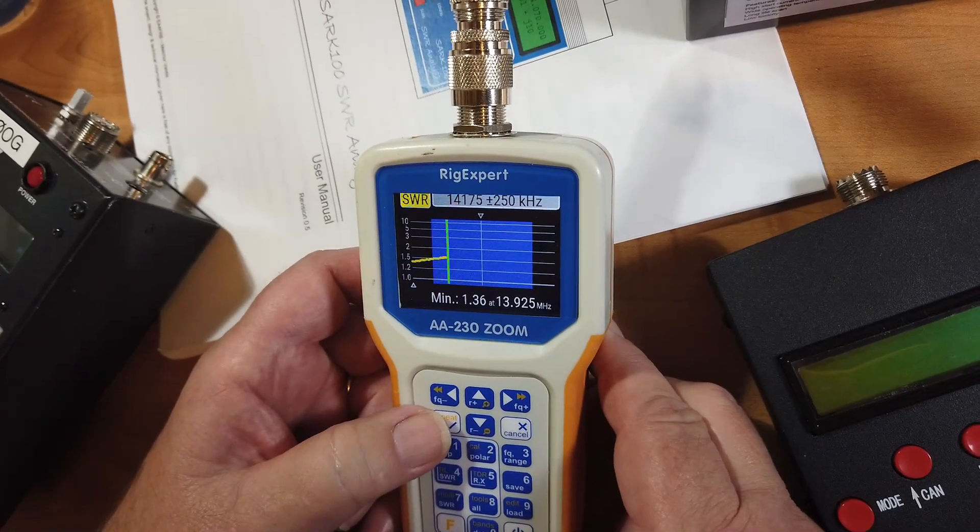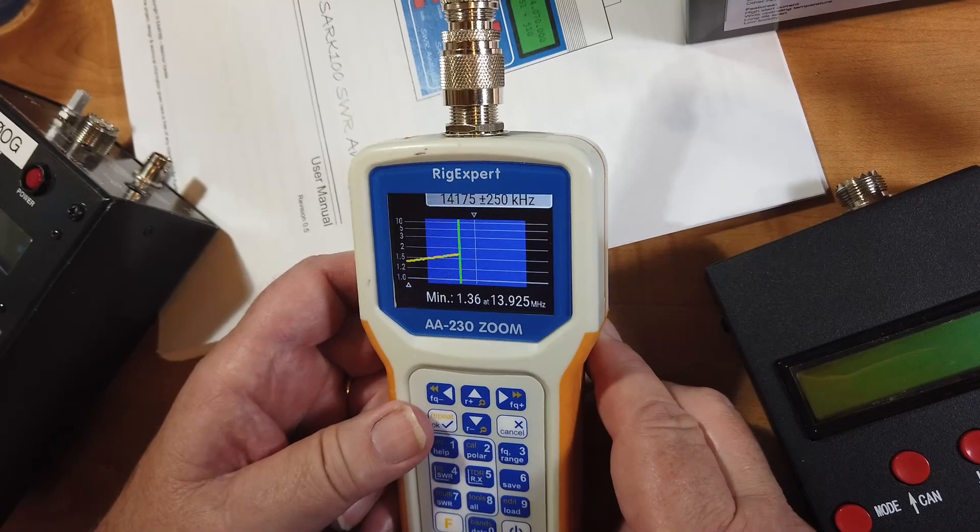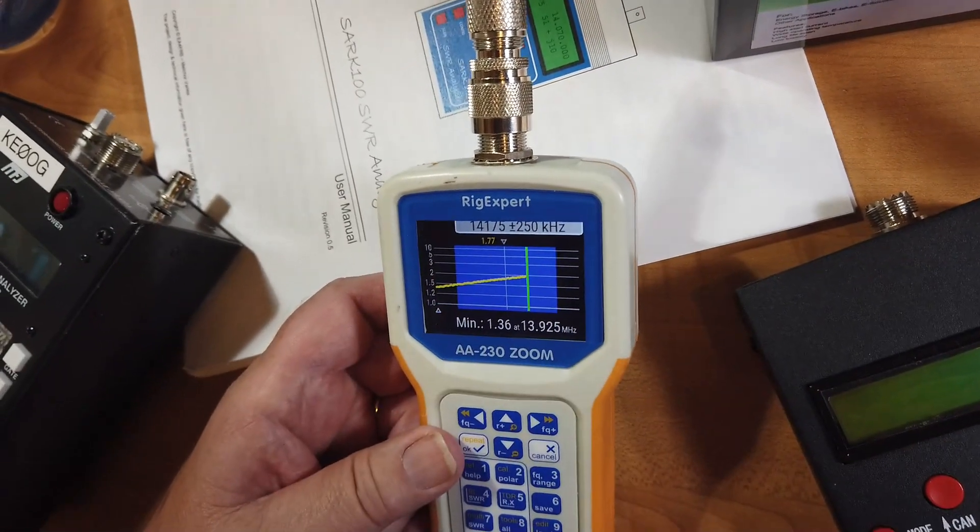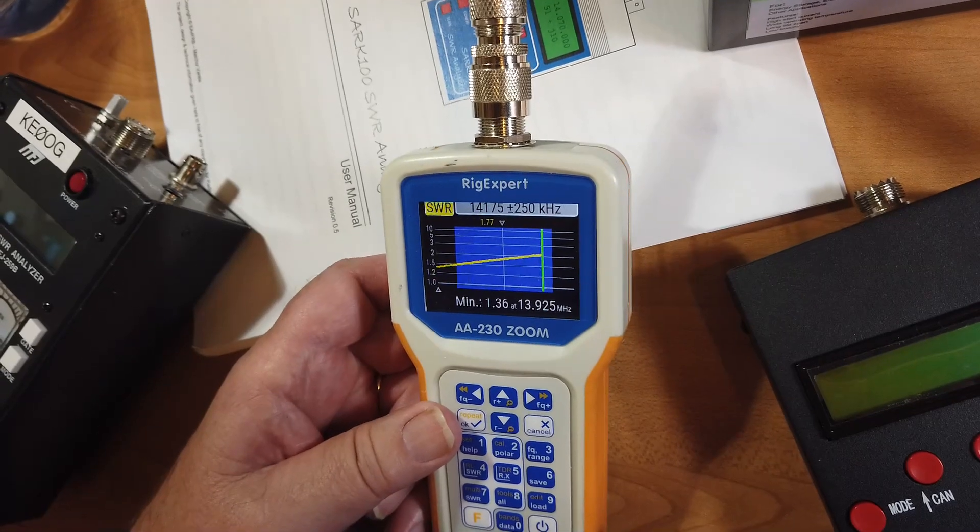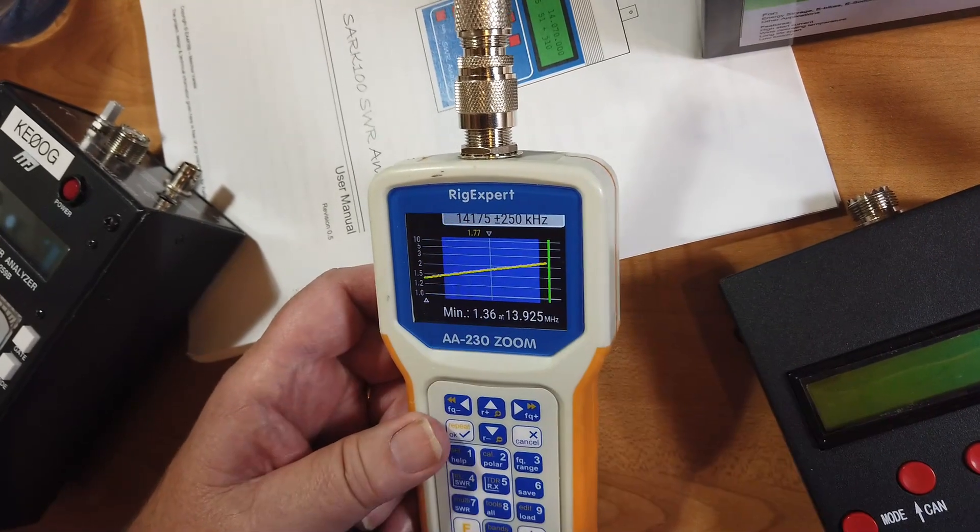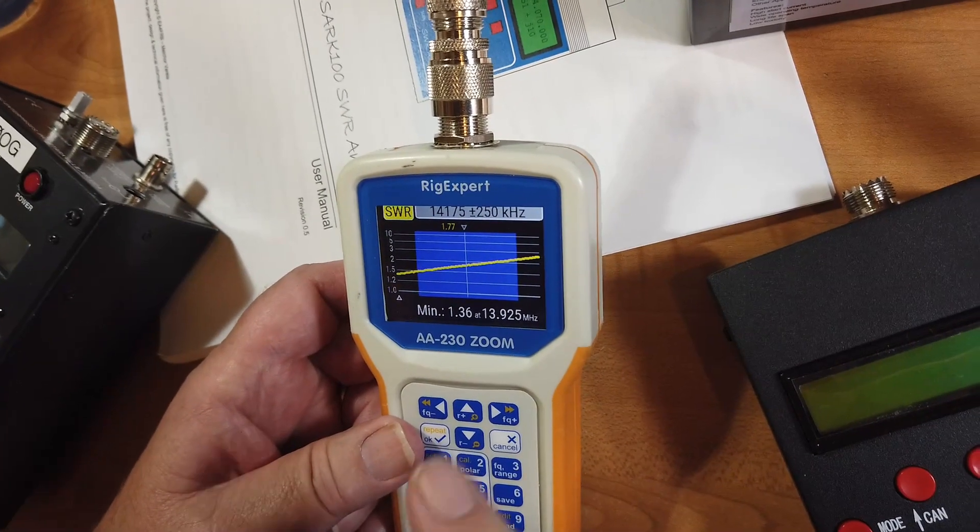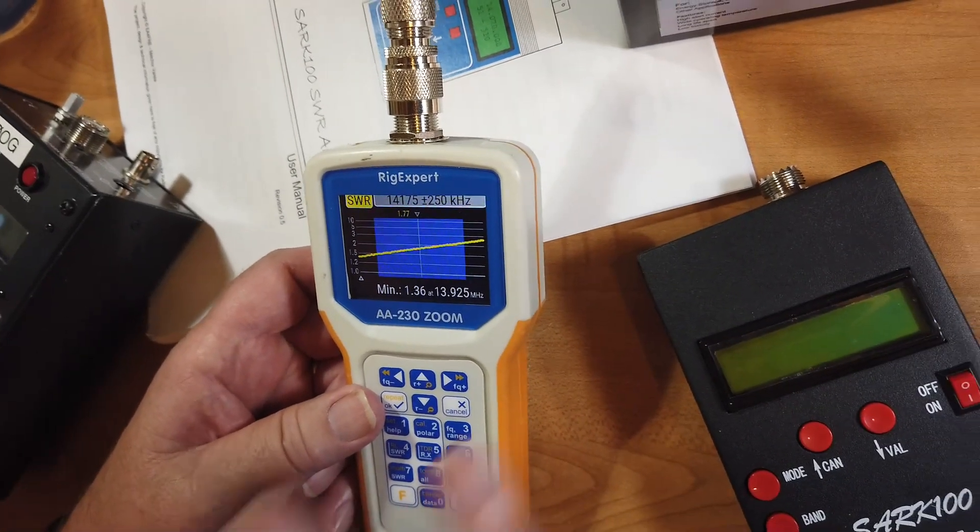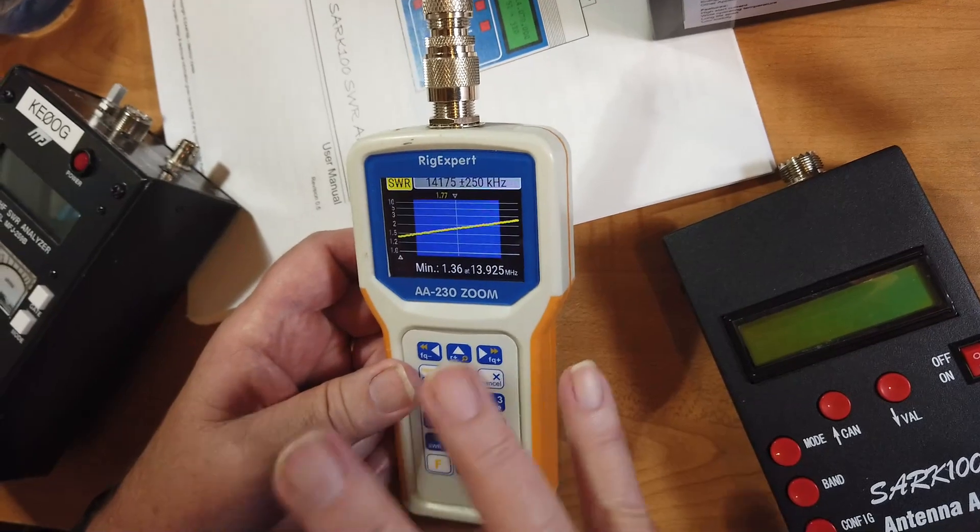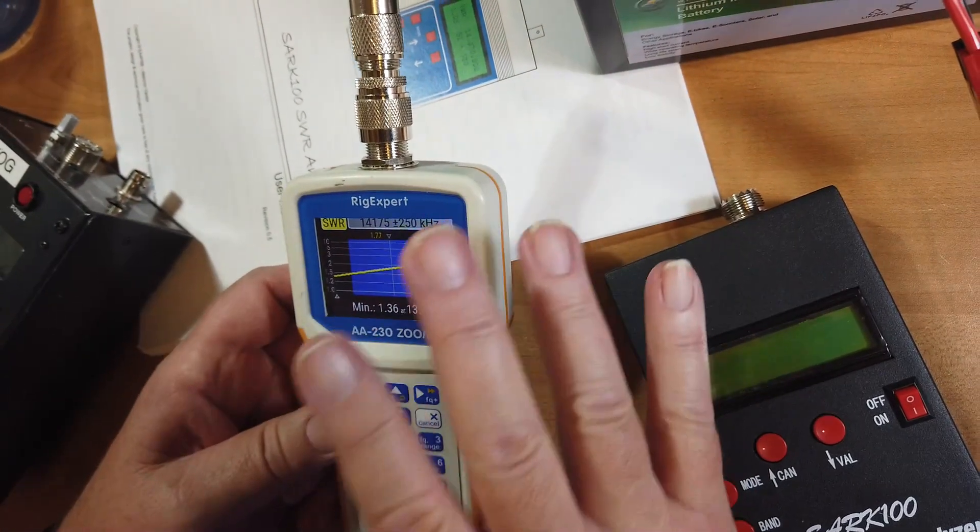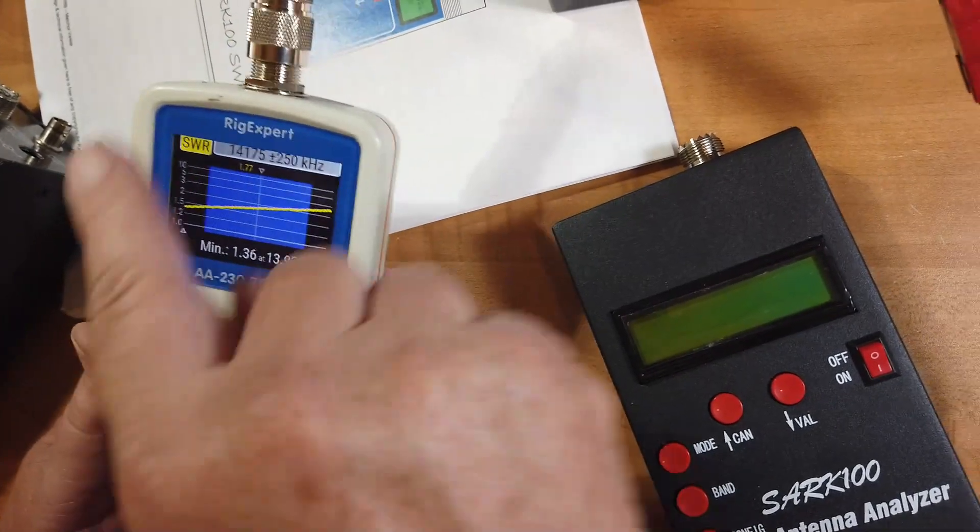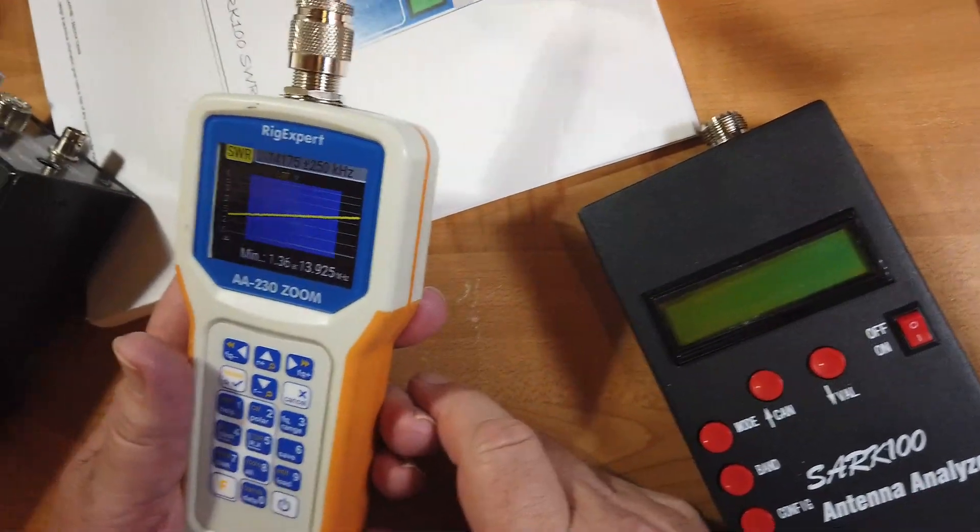We're going to go to band 20 meters. And then we're going to start the SWR. And just like the other, it shows the SWR across the band. It passes 2.0 right there, but it does not exceed 3 across the band. So, even though there's no provision for adjustment on the MFJ hex beam, we just have to work with it as it is.